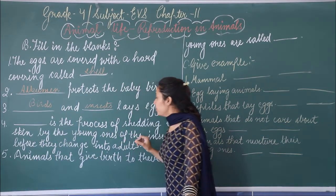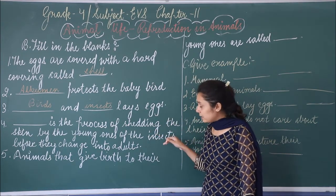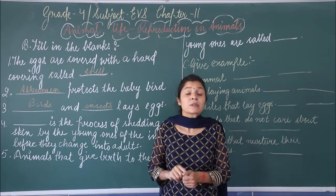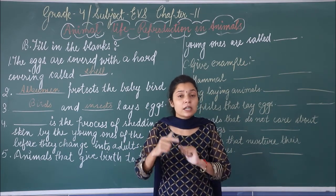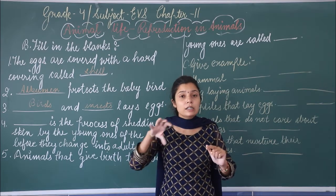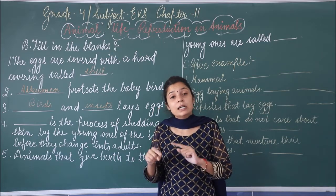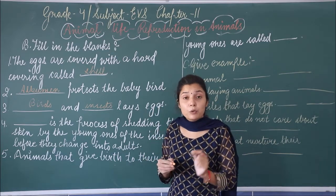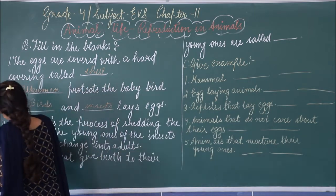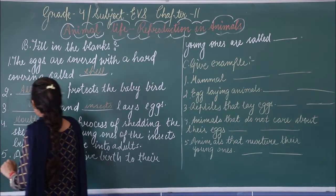Fourth: dash is the process of shedding the skin by the young ones of insects before they change into adults. The process jismein insects apni skin ko shed karte hain — nayi skin aati hai, and dheere dheere as the process happens, the insect finally changes into an adult. That process is called molting.